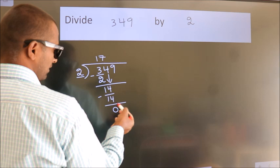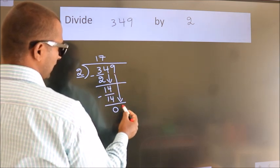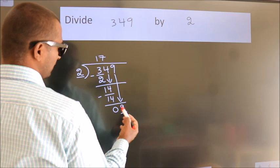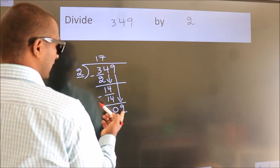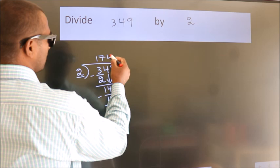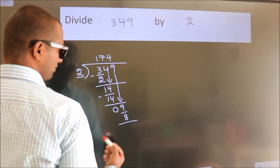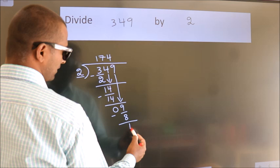After this, bring down the next number, so bring down 9, giving us 9. A number close to 9 in the 2 times table is 2 times 4 equals 8. Now we subtract and get 1.